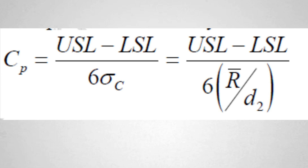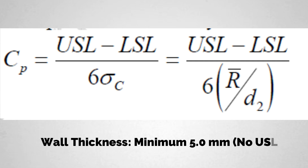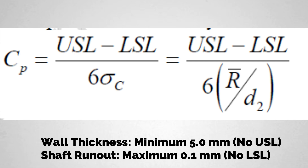Now, whether we need to calculate CP for unilateral tolerance — let us see. The formula for CP is: upper specification limit minus lower specification limit divided by 6 sigma. When we are talking about lower tolerance such as wall thickness, can we calculate CP or the process capability index? The answer is no. Similarly, for upper tolerance like shaft runout, we have only one specification limit, so we cannot use both USL and LSL. Therefore, in case of unilateral tolerance, CP cannot be calculated.